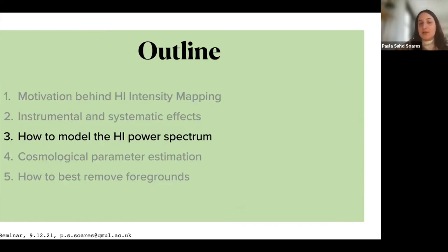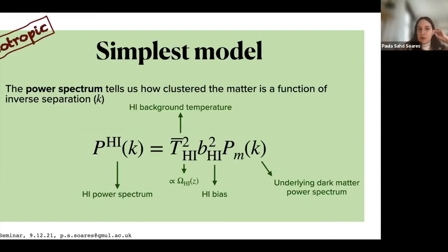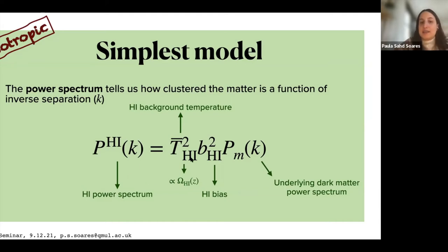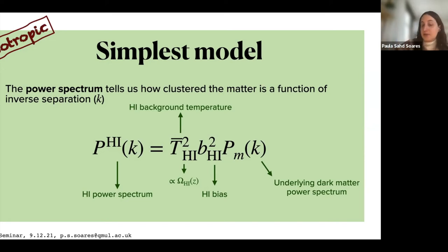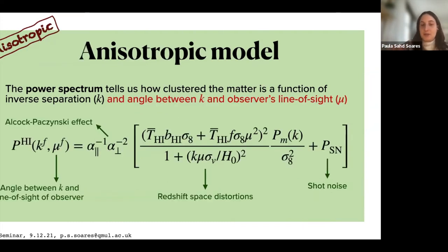Now I'll talk about how to model the HI power spectrum while ignoring foregrounds. The simplest model is an isotropic model — just a function of inverse physical separation k — which tells us how matter is clustered from our HI observations. You have your HI power spectrum as a function of the HI background temperature, which is proportional to omega-HI, the cosmic abundance of HI. You also have your HI bias — an interesting cosmological parameter, similar to the galaxy bias — because HI is not a perfect tracer of dark matter, plus your underlying dark matter power spectrum.